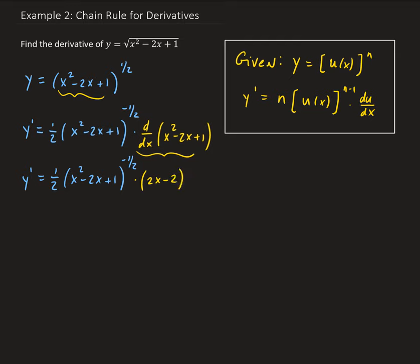Simplifying this, we get 2x minus 2, all divided by 2 times (x squared minus 2x plus 1) to the negative 1/2. We can move the negative 1/2 exponent to the denominator, which changes it to a positive 1/2 — that becomes a square root.